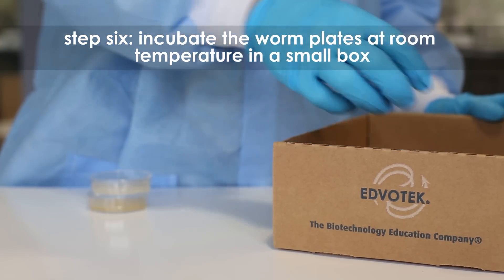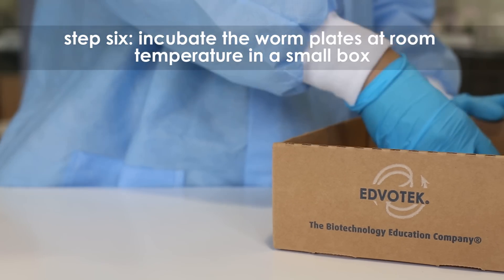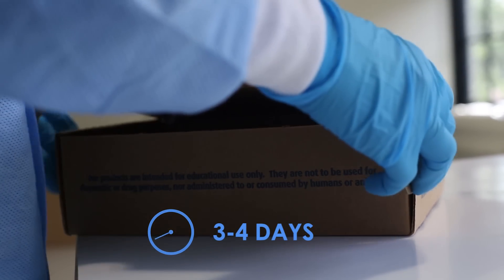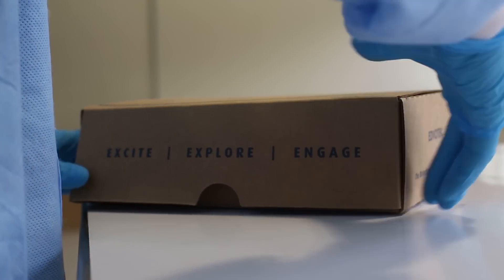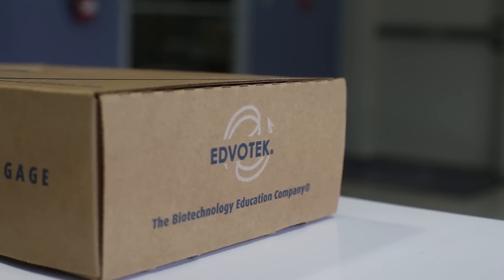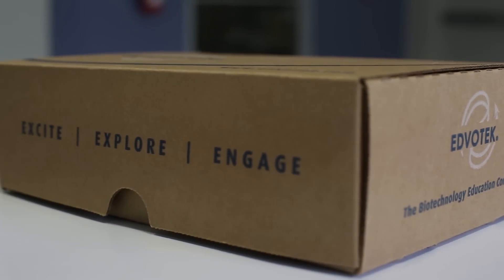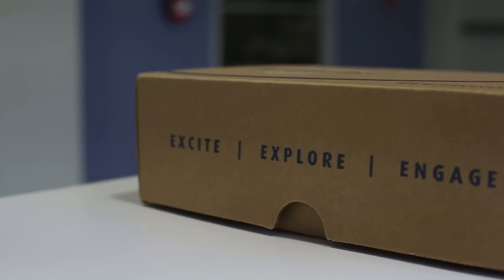Step 6: Place the worm plates inside a small box and incubate at room temperature for 3 to 4 days. If a plate contains 50 or more worms, proceed with the experiment. If a plate contains less than 50 worms, incubate for an additional 1 to 2 days.